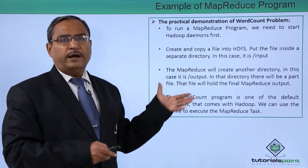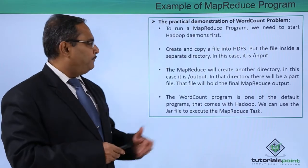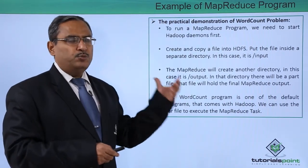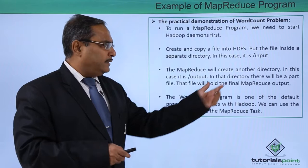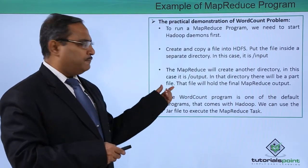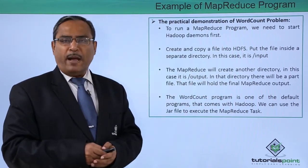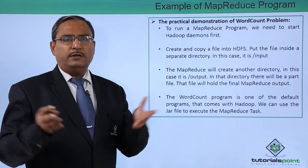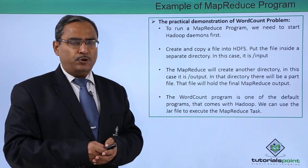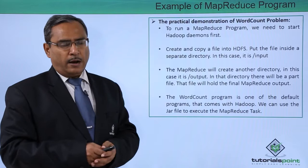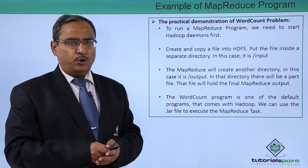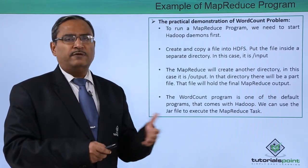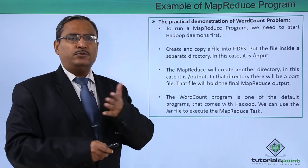Here we are having one file on which this MapReduce program will be working. The MapReduce will create another directory — in this case it will be slash output — and in that directory there will be a part file which will hold the final MapReduce program output. In the input folder we will have our respective file, and you are supposed to use the put command to copy the file from the Unix system to the HDFS.